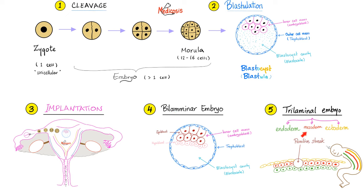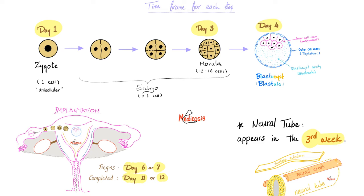Then the trilaminar embryo: endoderm, mesoderm, and ectoderm. Your entire nervous system came from the ectoderm. Here's the time frame: zygote and fertilization is day one; morula happens around day three; blastocyst is day four; implantation begins around day six or seven, completed by the 12th day. So we are almost done with two weeks. In the third week, you will get the neural tube, which is part of the ectoderm, and you now have the trilaminar embryo.